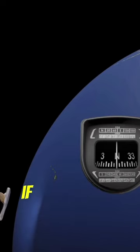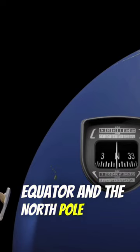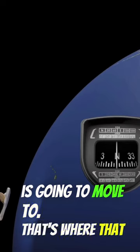Now I mentioned if you're flying near the equator, you're not going to have that magnetic dip error. But between the equator and the North Pole, as you can see, this aircraft is going to move to that's where that magnetic dip error starts to happen.